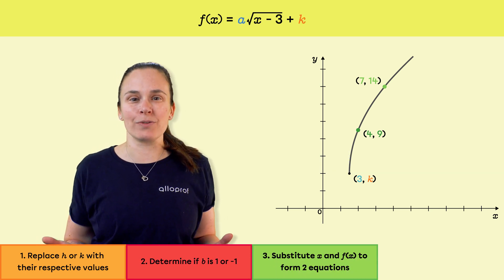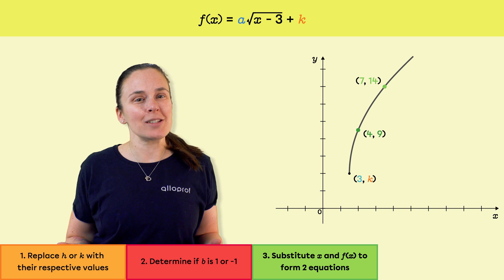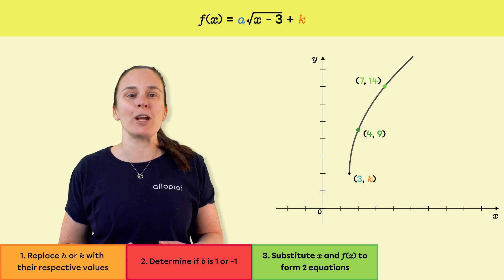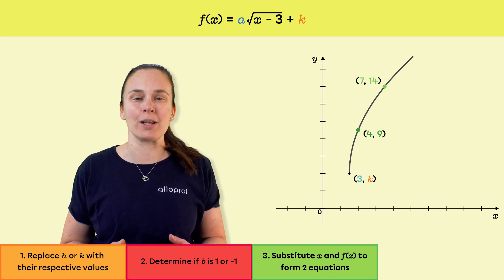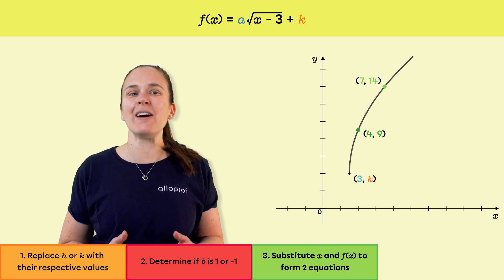We still don't know the values of k or a, so we need to solve a two variable system of equations formed using the two given points. We need to make as many equations as unknowns when trying to find the values of these unknowns.